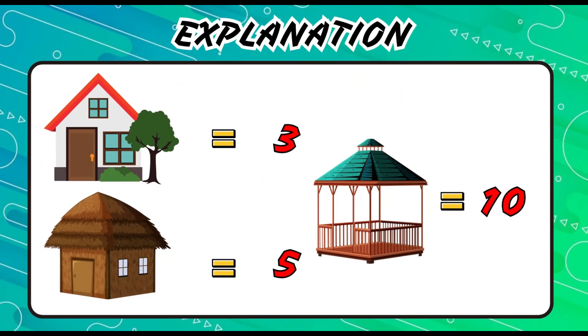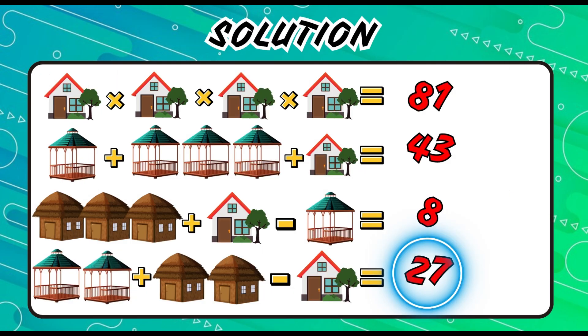Yes, correct. The brick house holds the value of 3, the hut is 5, and the wooden roof pavilion is 10. So the right equation is 20 plus 10 minus 3 equals 27. If you guessed it already, comment down below.